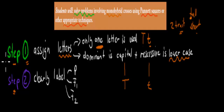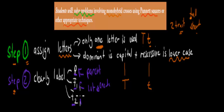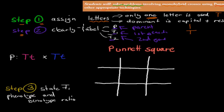Next, we're going to make sure we clearly label our P, F1, and F2 generations. The P generation is the parent generation. F1 is the first generation — the offspring of the parent generation. F2 is the second generation — the offspring of the F1 generation. Make sure we clearly label those in our Punnett squares or branch diagrams.